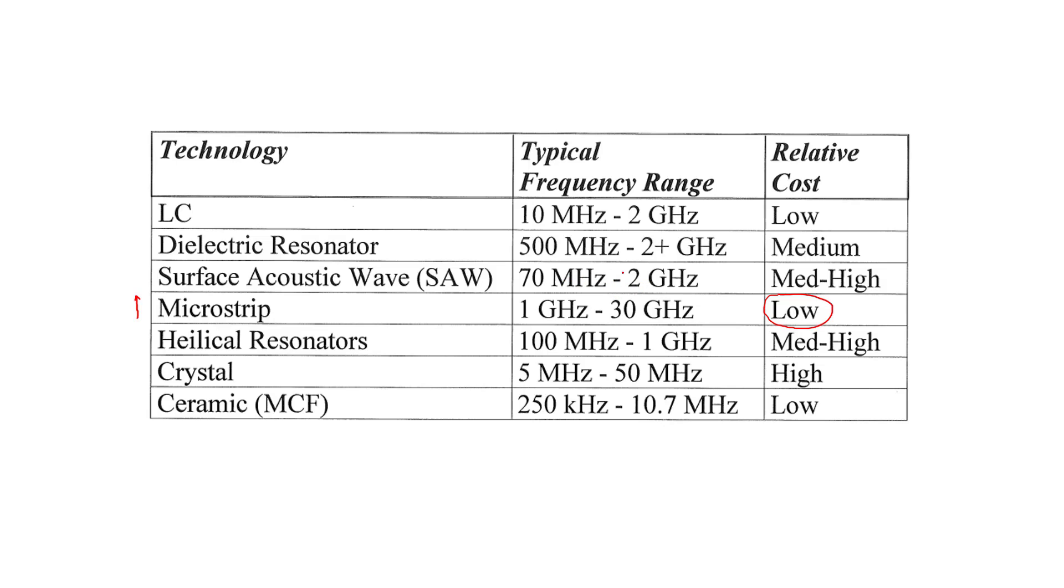Surface acoustic wave, SAW filter, is used commonly, and for example we can use this for cellular. As you see, the range is exactly there in cellular. These two filters are commonly used for low frequency applications. The crystal has a high cost, but these filters are small comparing to, for example, the microstrip or dielectric resonators or LC filter.